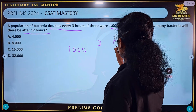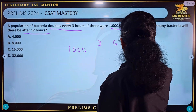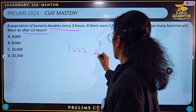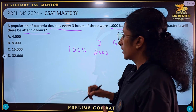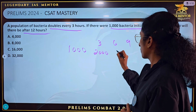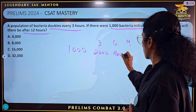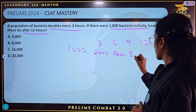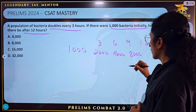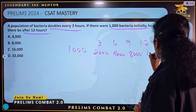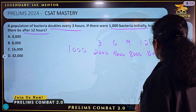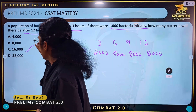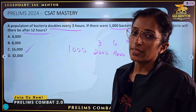Going through the hours: 3, 6, 9, 12. After 3 hours: 2000. After 6 hours, that means double again: 4000. After 9 hours: 8000. After 12 hours: 16,000. The answer is C — 16,000.